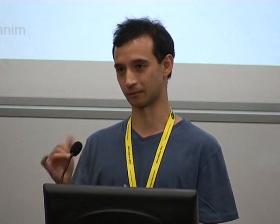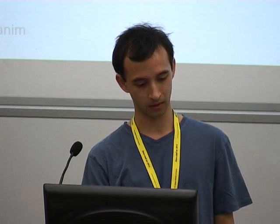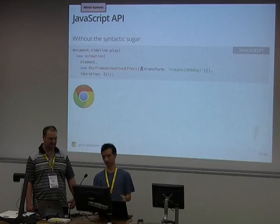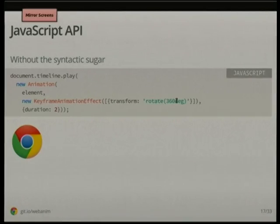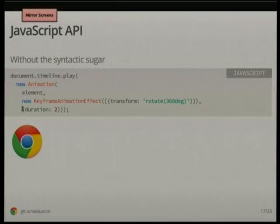The element.animate call is syntactic sugar for telling the document timeline to play a new animation on an element with a keyframe animation effect, equivalent to CSS keyframes. This is also somewhat syntactic sugar to say let the last keyframe be transform 360 degrees — the first keyframe is left unset, so it grabs whatever values are on the element at the time you play it. The third parameter where we had two for the duration can be expanded to a whole slew of other properties; two is just syntactic sugar for duration two.